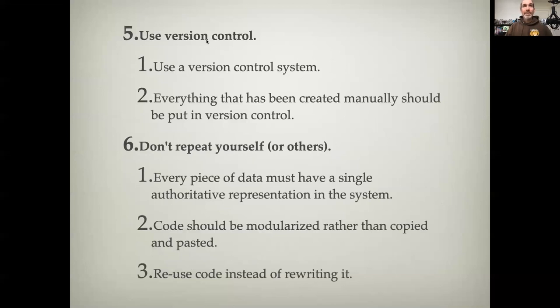Coming back again to our discussion on Git, use version control. Everything that's been created manually should be put into version control. The flip of that, things that are generated automatically, typically don't go into version control. Files that are outputs or intermediate steps that are machine generated typically don't need to go into version control.